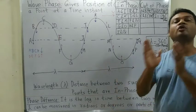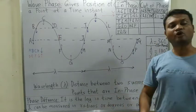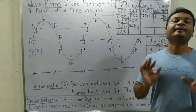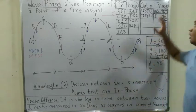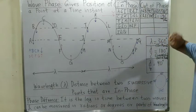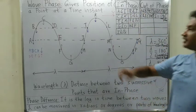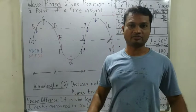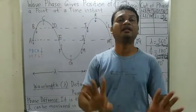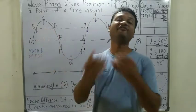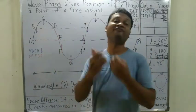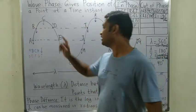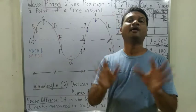Out of phase means those which are not in phase. So A and B are out of phase, A and C are out of phase, A and D are out of phase, A and E are out of phase, A and F are out of phase, A and G are out of phase.